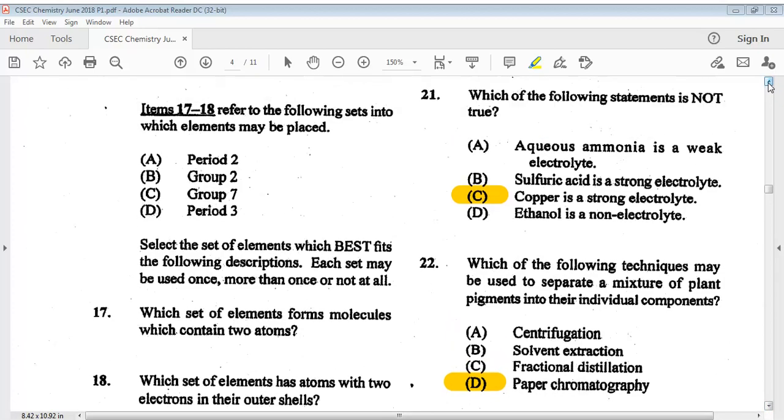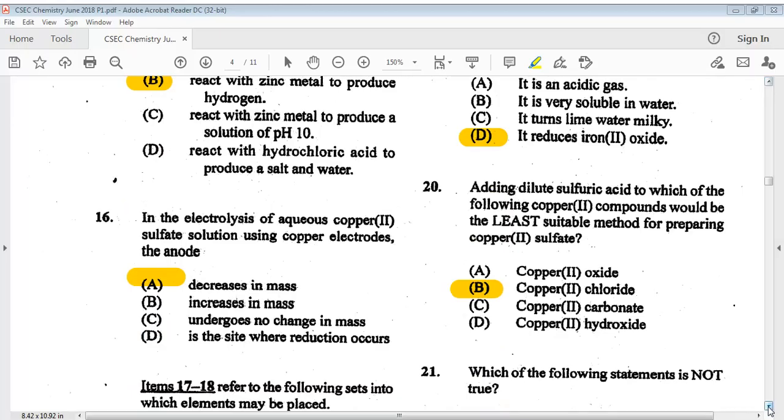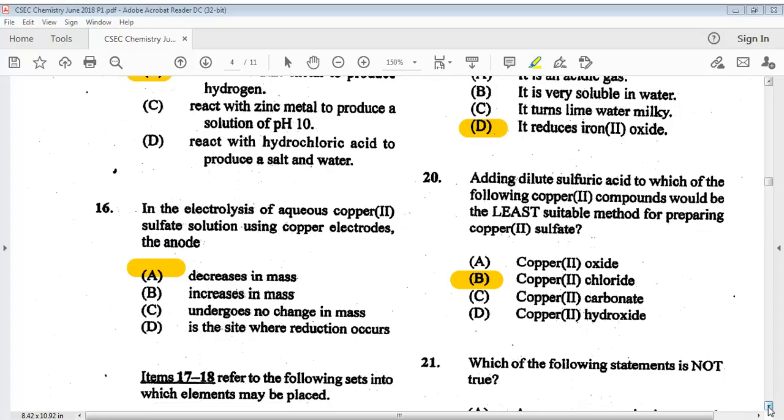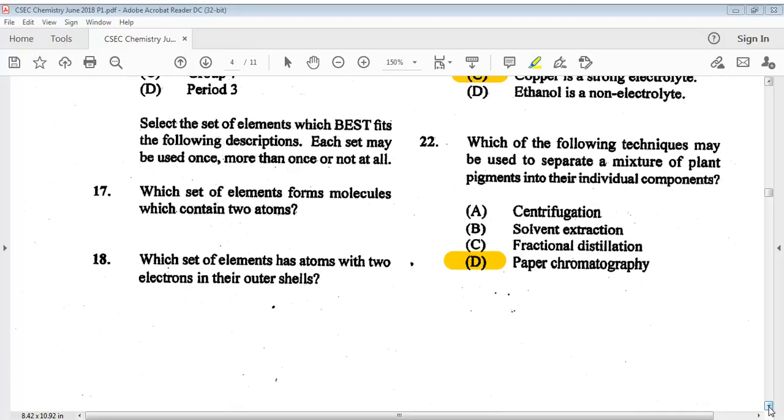Let's go on to number nineteen. Which of the following statements is true of carbon monoxide? The answer is D, it reduces iron 2 oxide. Question twenty: adding dilute sulfuric acid to which of the following copper 2 compounds would be the least suitable method for preparing copper 2 sulfate? The answer is B, copper 2 chloride. Question twenty-one: which of the following statements is not true? The answer is C, copper is a strong electrolyte. Question twenty-two: which of the following techniques may be used to separate a mixture of plant pigments into their individual components? The answer is D, paper chromatography.